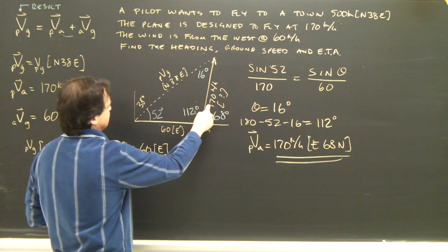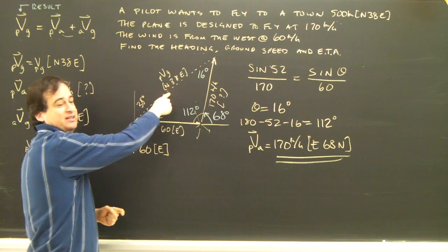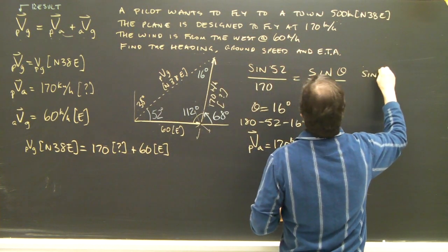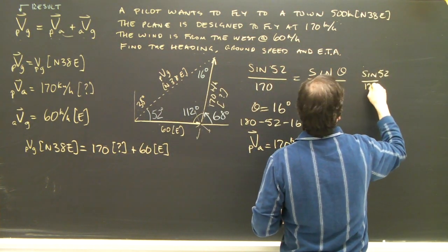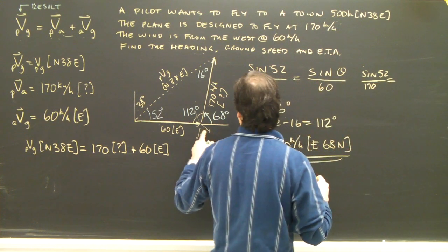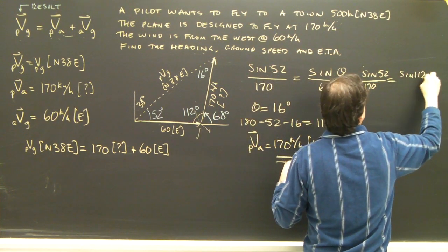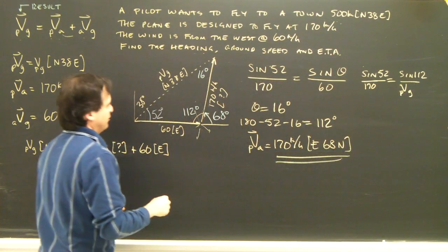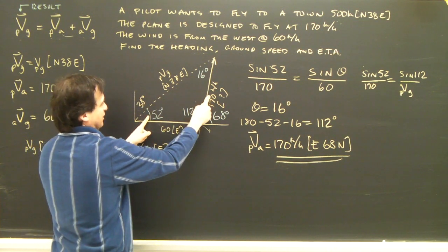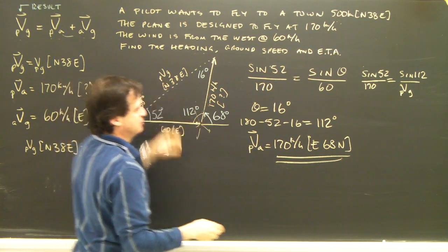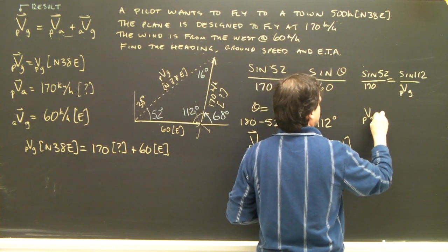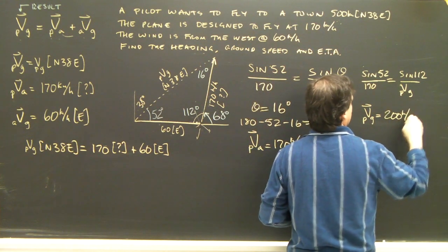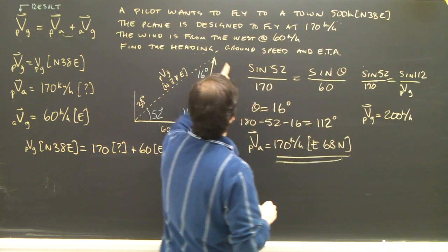Well, I've got this side, this side. I've got this angle, this angle, and this angle. It should be pretty easy to find this side here. So I'll do a similar sort of thing. Sine 52 over 170 is going to equal sine of 112 over the plane relative to the ground. Okay? Sine of this over that side is equal to the sine of this over that side. So I get the plane relative to the ground is equal to 200 kilometers per hour. And that's what I was looking for, the ground speed.